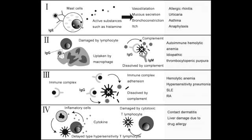Type 4 hypersensitivity reaction also includes contact dermatitis due to poison ivy and nickel allergy. It's important to remember that poison ivy is a type 4 hypersensitivity and not type 1, because other plant-related conditions such as hay fever are type 1 hypersensitivity. So remember, poison ivy is in fact type 4 hypersensitivity.